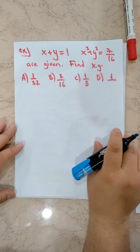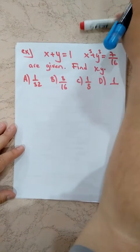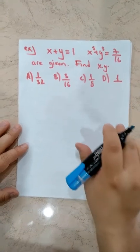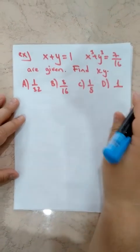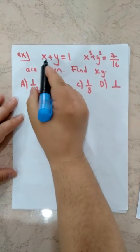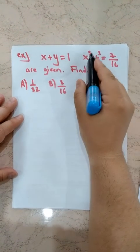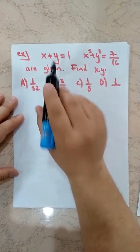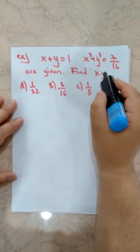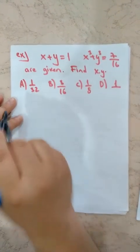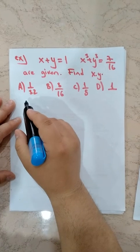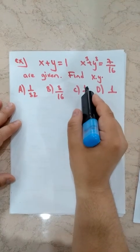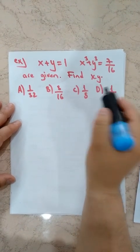Let's try to solve this last example. We are given X plus Y equals 1 and X cubed plus Y cubed equals 7 over 16. Find X times Y — the product of X and Y. We have multiple choice: A is 1 over 32, B is 2 over 16, C is 1 over 8, and D is equal to 1.